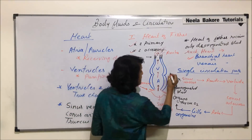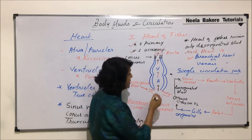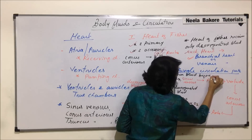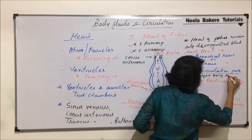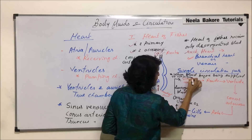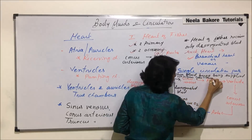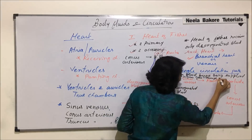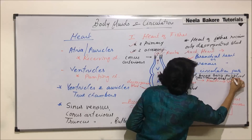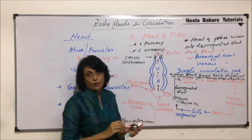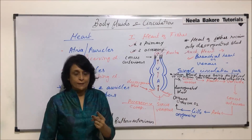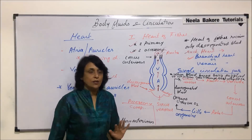So, single circulation: when blood, before being supplied to any organ, passes through the heart only once. In our case, before the blood reaches an organ it goes through the heart two times — that circulation is known as double circulation.